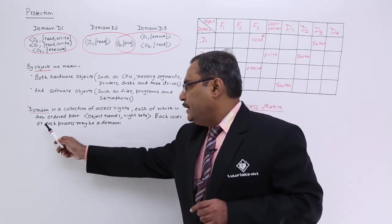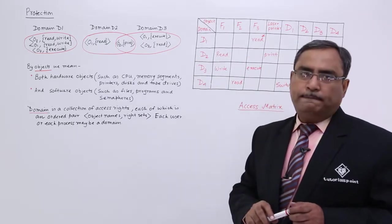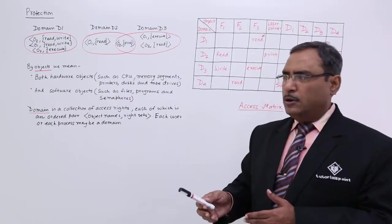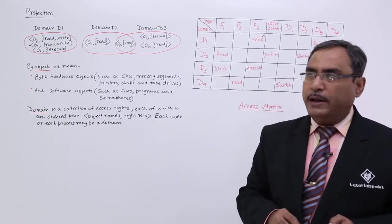Each user or each process may be a domain. So, each user can be treated as one domain or each process may be treated as a domain.